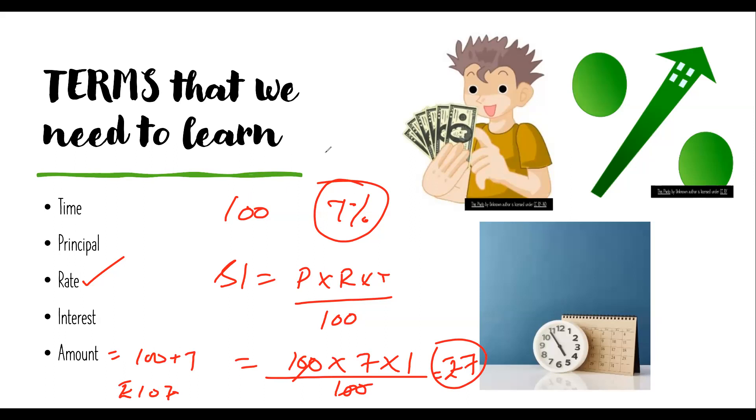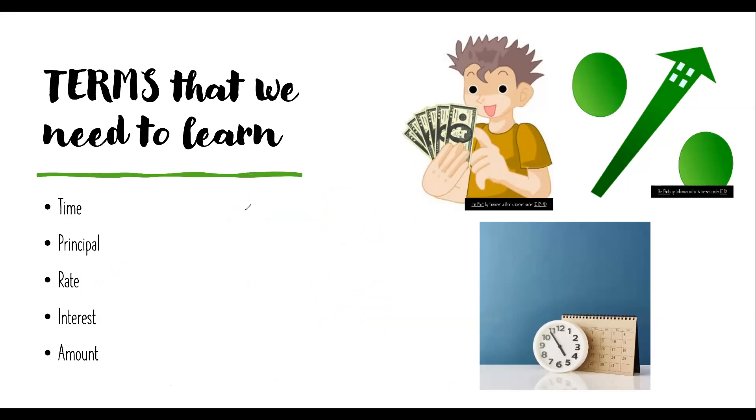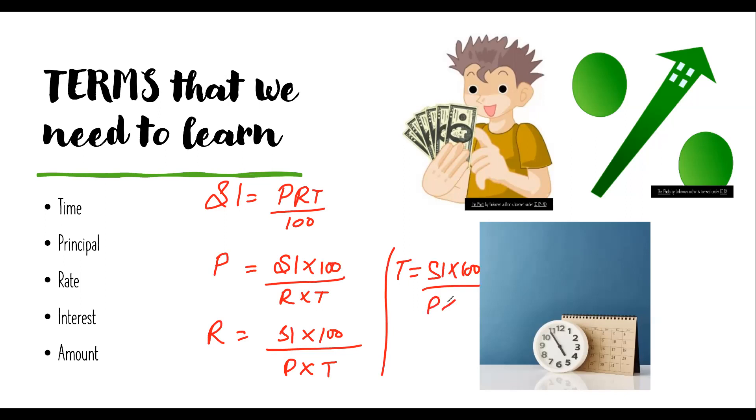I hope you have understood this. I'll share other formulas which we get from this main formula. Take P on this side and all the other terms on the other side, so it will be P = SI × 100 / (R × T). Similarly R = SI × 100 / (P × T) and T = SI × 100 / (P × R). These are the alternate formulas.